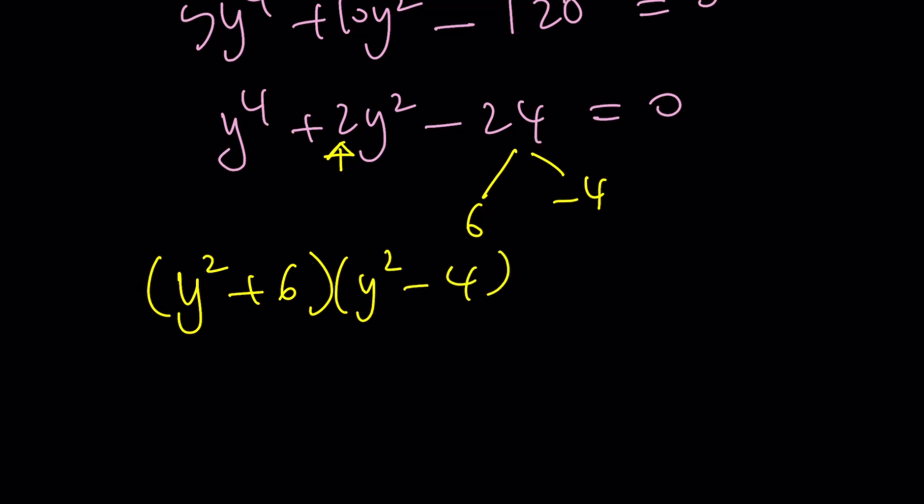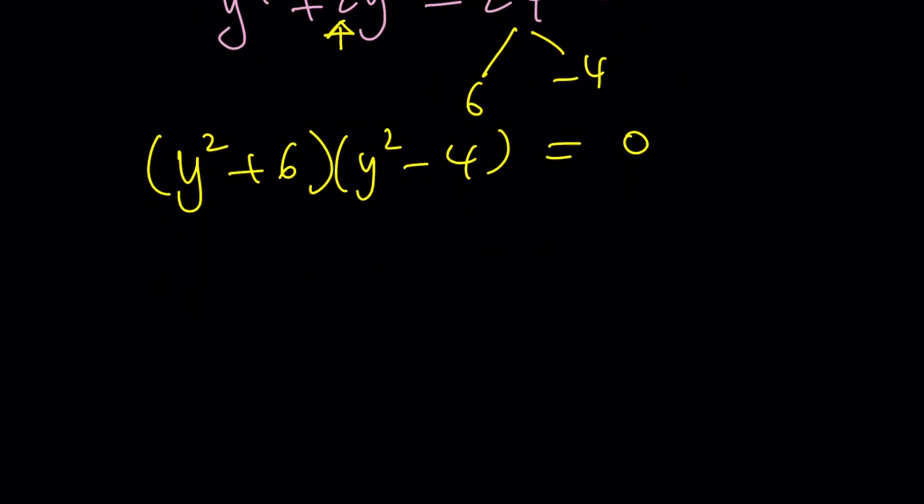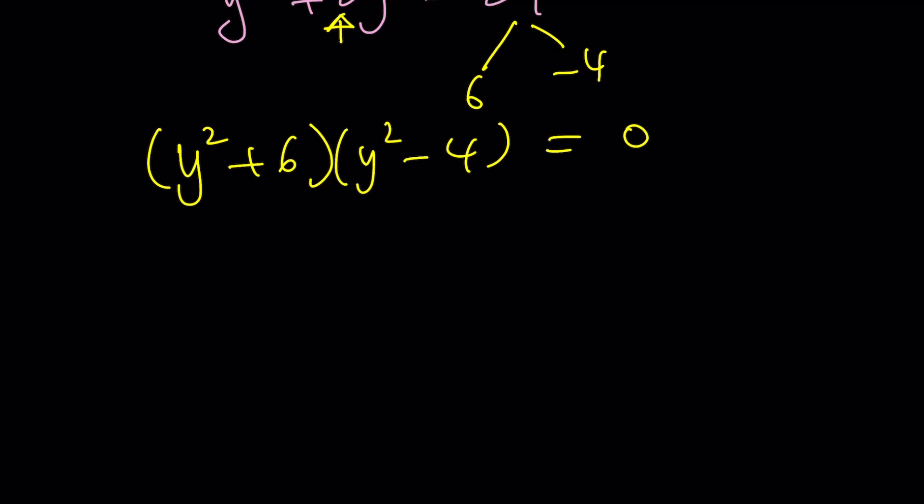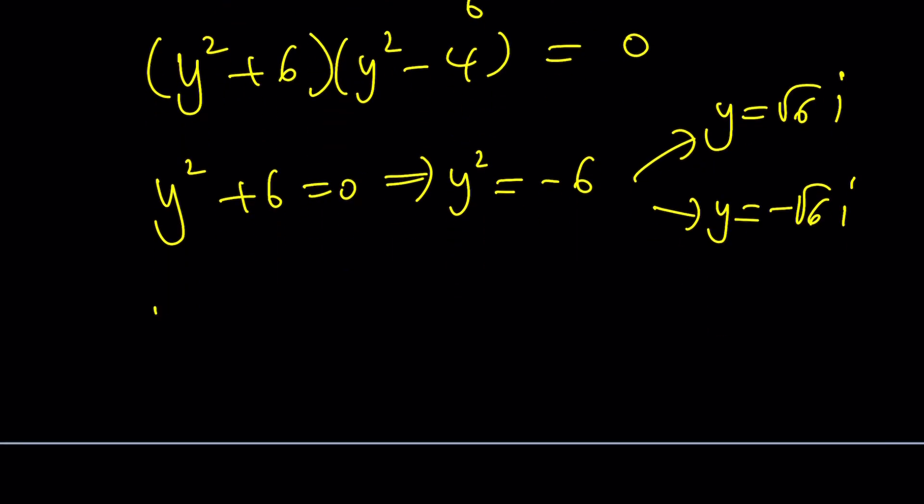Just pretend y^2 is another variable like z. And then from here, we get four solutions, right? If y^2 + 6 = 0, this gives us y^2 = -6. And from here, as you know, we get y = √6i and y = -√6i. And if y^2 - 4 = 0, from here, we get y^2 = 4. And that gives us y = 2 and y = -2.